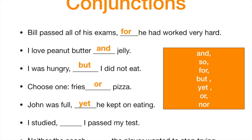John was full, yet he kept on eating. Here, 'yet' functions much like the word 'but,' showing a contrast. I studied, so I passed my test. Here 'so' is a cause-and-effect conjunction — something I did led to something else. Cause and effect. This last one — 'nor' — we don't use too often, but it's good to know. Neither the coach nor the player wanted to stop trying. This is like 'or' with a negative.